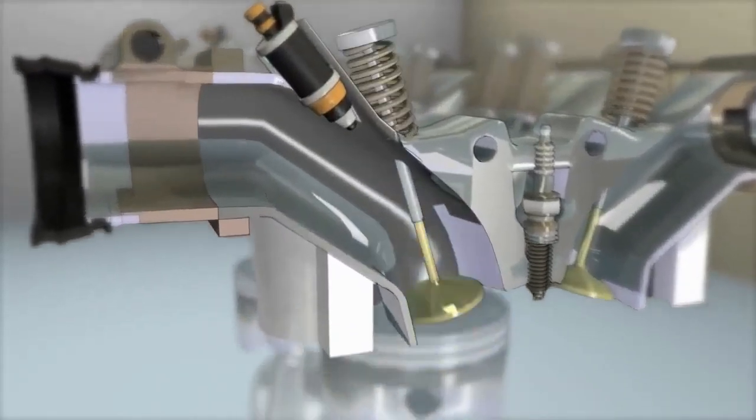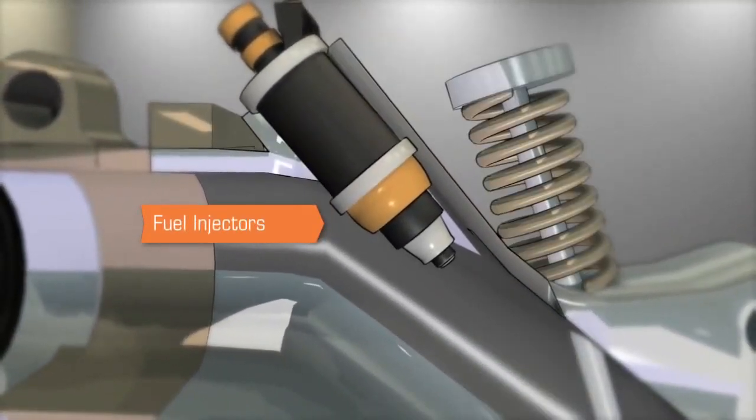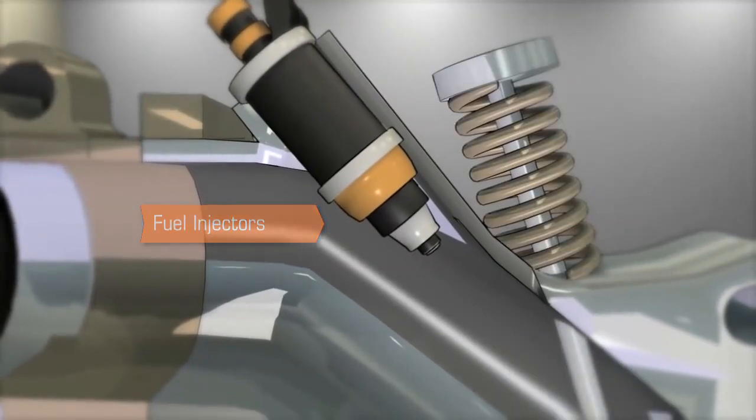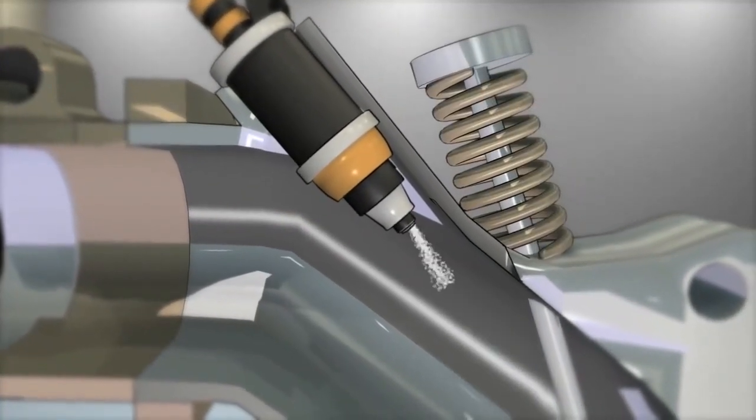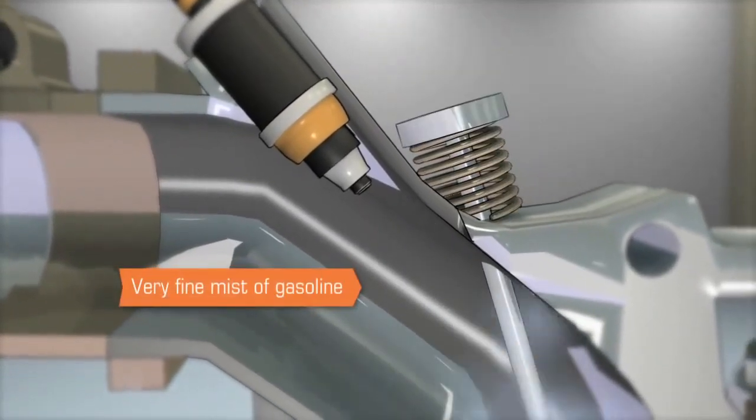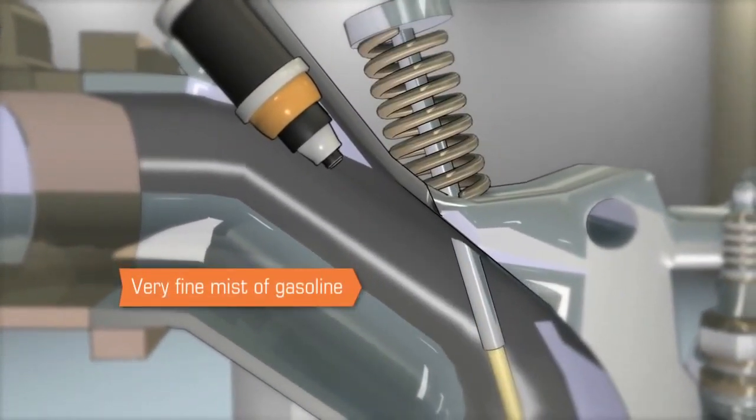Gas is then delivered to the engine through complex fuel injectors, which often sit just outside the combustion chamber. The fuel injectors must create a very fine mist of gasoline to vaporize effectively in preparation for combustion.